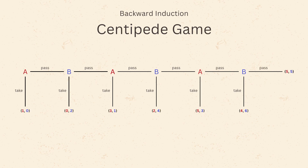The game ends as soon as a player takes the money, or after a fixed number of rounds — which is usually 100, but for simplicity let's limit it to 6. To find the sub-game perfect equilibrium, we need to use backward induction.